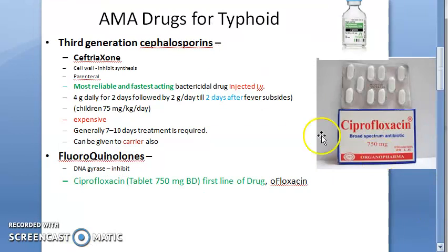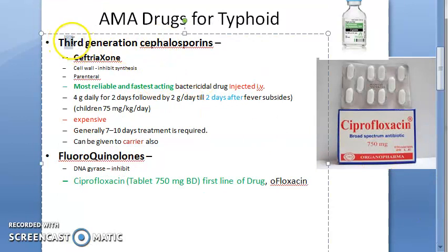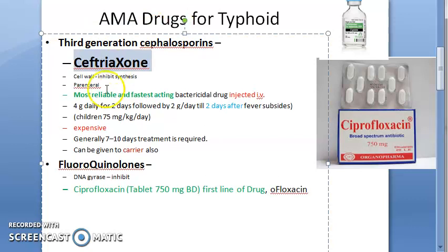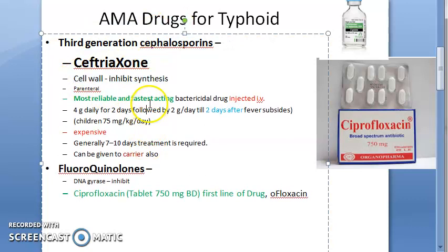One more thing — let's look at how these drugs affect the bacteria. Ceftriaxone is a third generation cephalosporin, so it inhibits cell wall synthesis.